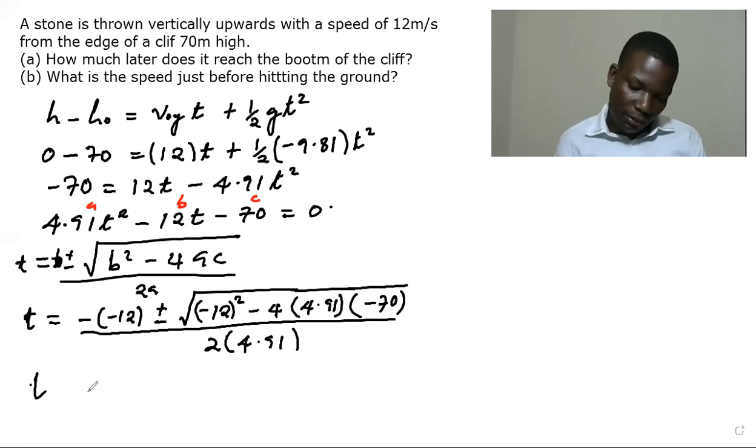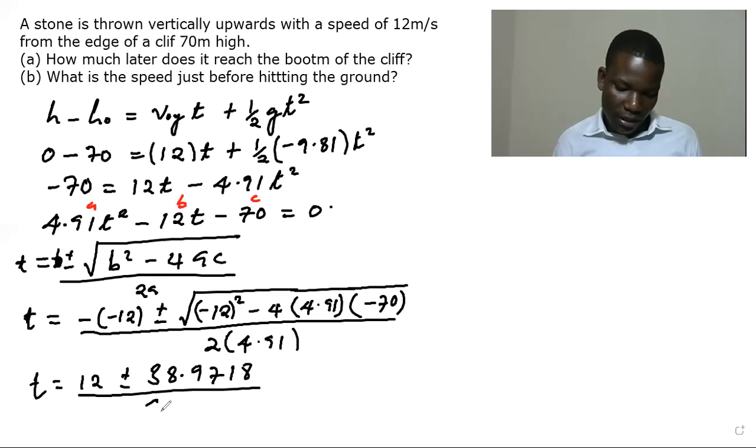So we have t being equal to 12 plus or minus, and then we have negative 12 squared, that's actually 144. And then once we multiply negative 70 by 4.91 by negative 4, we have positive 1374. Then we add that, we get 1518. And the root of that gives us 38.9718. And this is divided by 9.81.